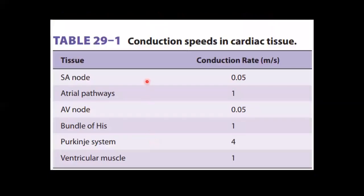This table shows the conduction speeds in the cardiac tissues. SA node conduction speed is 0.05 meters per second; AV node also has the same rate. Atrial pathways, bundle of His, and ventricular muscle have a conduction speed of 1 meter per second, and the Purkinje system has a conduction speed of 4 meters per second.